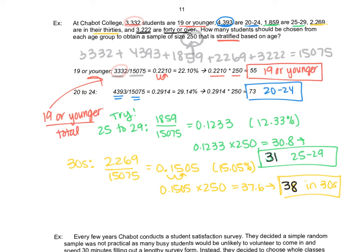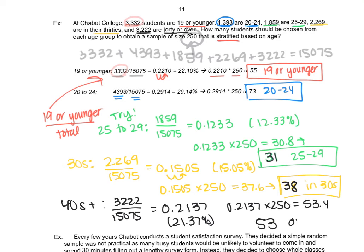And our final one. We probably could subtract to find the last one, but we should check the math as well. So 40s plus. We have 3222 out of 15075. Quick division. 0.2137. About 21 percent, a little more. But we'll just do 0.2137 times 250, because we're doing 21 percent of 250. And we get slightly over 53, 53.4. So 53 students over 40. And the last thing I would do is I would just add those numbers up. Make sure they add up to 250 still. So 55 plus 73, plus 31, plus 38, and plus 53. We still got 250. So we have a random sample of 250, but we have instead randomly sampled within each age group.